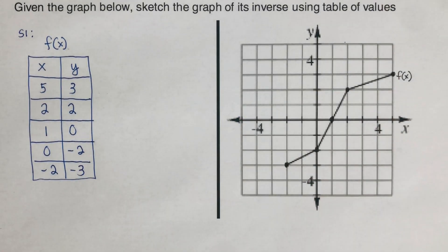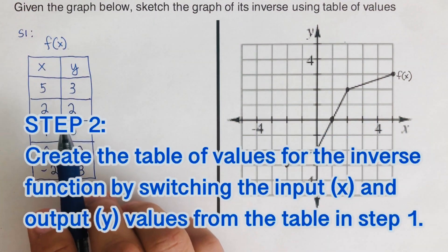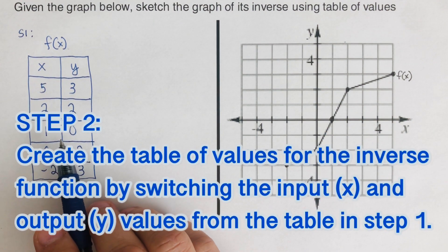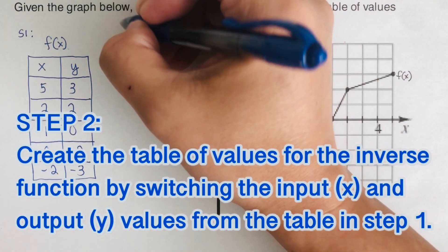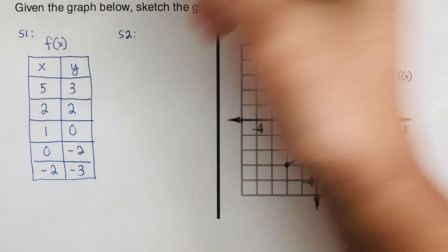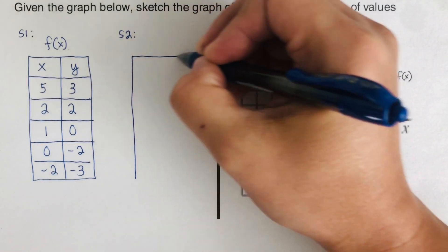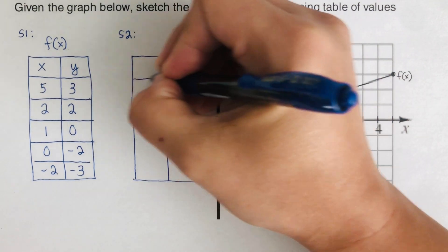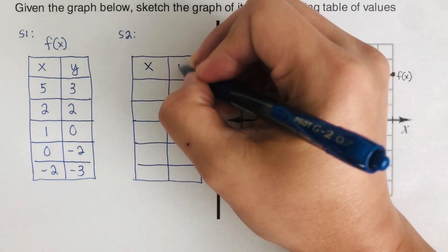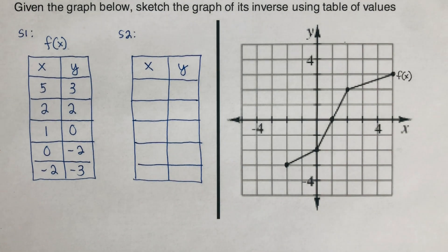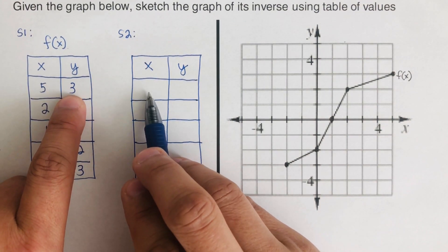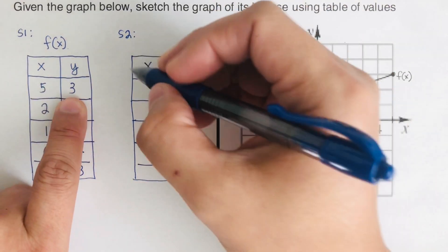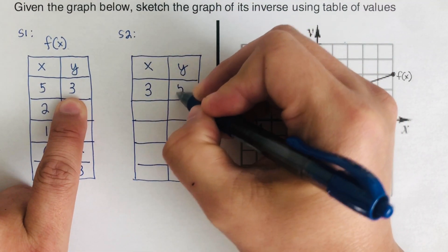Now Step 2: create a table of values for the inverse function by switching the input x and the output y values from the table in Step 1. I label this as Step 2 and create the same table. The values I fill in here are switched — the y becomes the x and the x becomes the y. So this would be (3, 5), and then I do the rest of them.